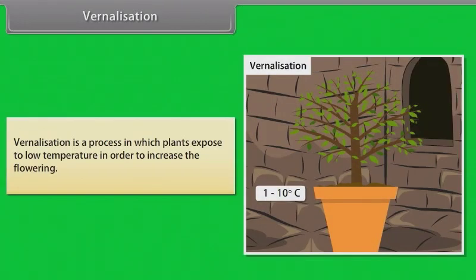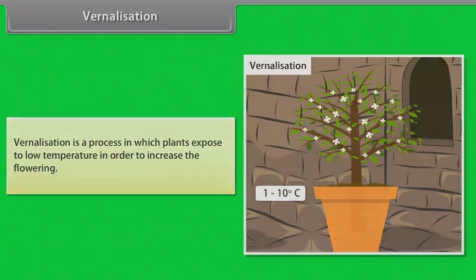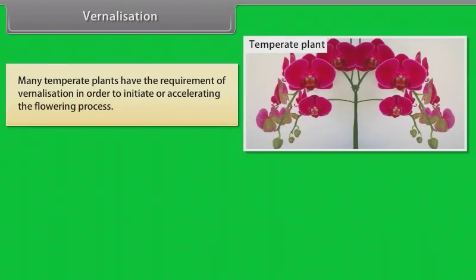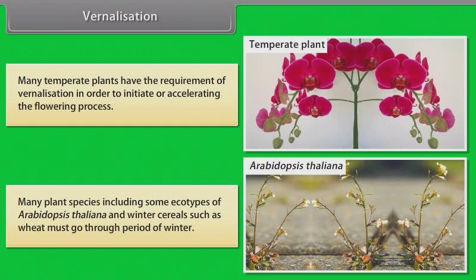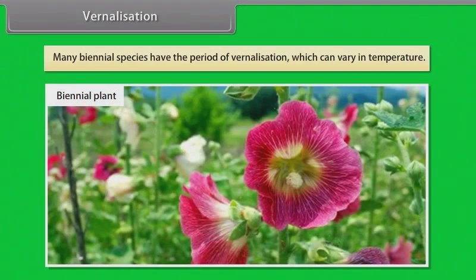Vernalization. Vernalization is a process in which plants are exposed to low temperature in order to increase flowering. Many temperate plants have the requirement of vernalization in order to initiate or accelerate the flowering process. Many plant species include some ecotypes of Arabidopsis thaliana and winter cereals such as wheat must go through period of winter. Many biennial species have the period of vernalization which can vary in temperature.